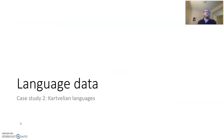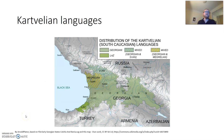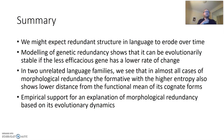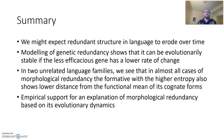I also had a chance to examine this for the Kartvelian languages, a very different language family, and I've kept those slides for anyone who would like to look at them. In summary, we've seen how redundant morphological structure might be expected to erode over time through drift. One possible explanation comes from Novak's modelling of genetic redundancy, showing that redundancy can be evolutionarily stable if the less efficacious element of the redundant pair also has a lower rate of change. We checked this in two unrelated language families and found that in almost all cases of morphological redundancy, the formative with higher entropy also shows the lowest distance from the functional mean of its cognate forms — suggesting lower rates of change — supporting the hypothesis.